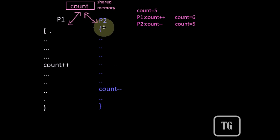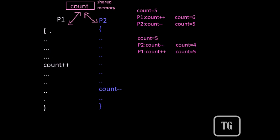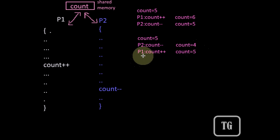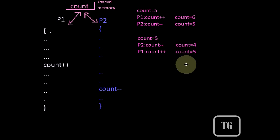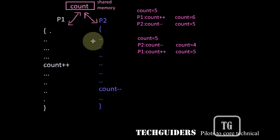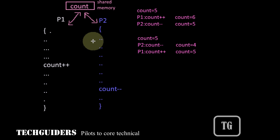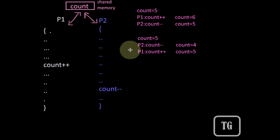Now consider the other order — P2 finishes first, followed by P1. P2 first performs a decrement: with initial count = 5, count becomes 4. Then P1 performs an increment, making count 5 again. Here again the value of count remains the same. So the order of execution doesn't matter in non-parallel execution — since one increments and the other decrements, count remains 5, which is the expected valid result.